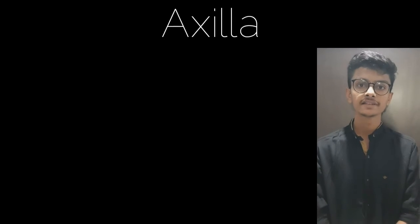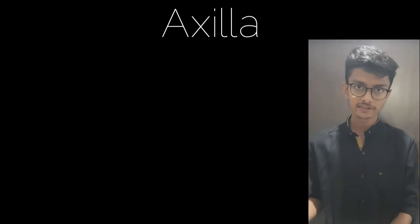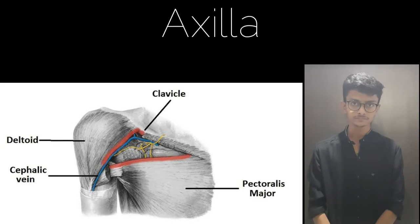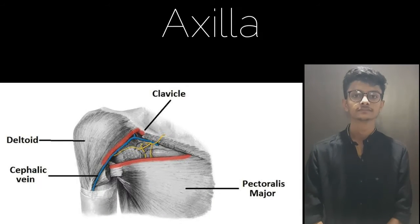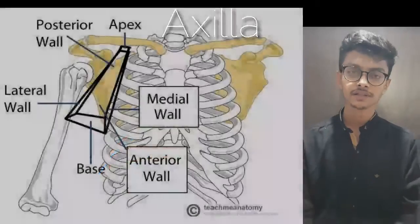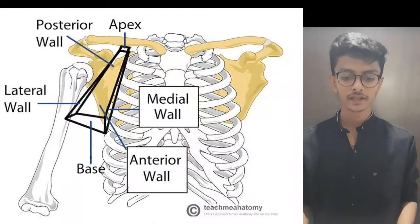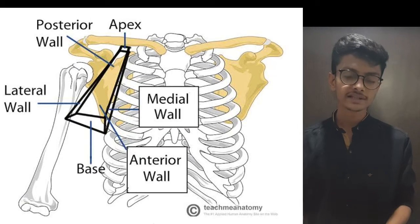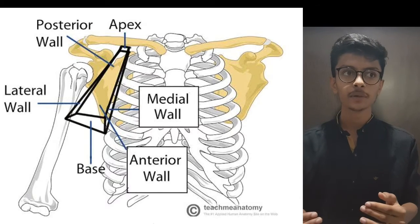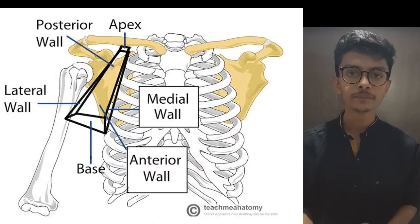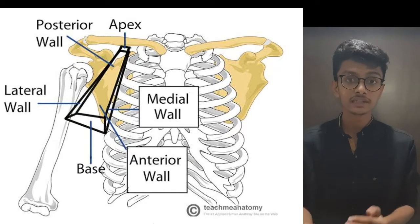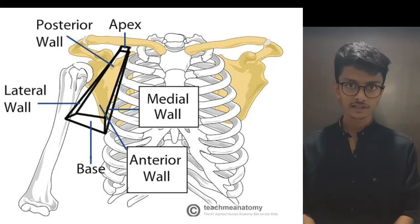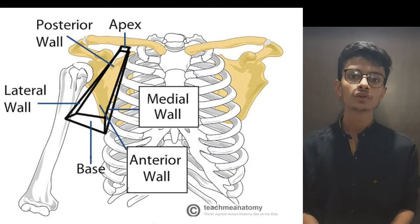Before moving to the axilla, first look at the picture showing here. After looking at this picture, we can get an idea about where it is located. Basically, it is located below the shoulder joint, also known as the glenohumeral joint.